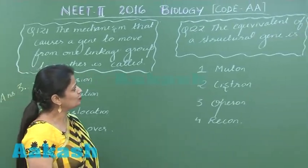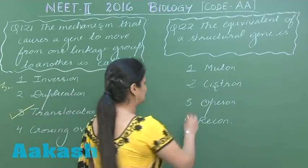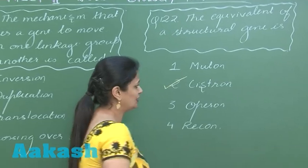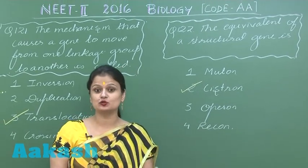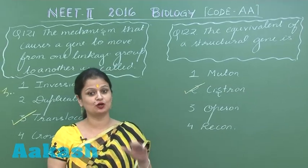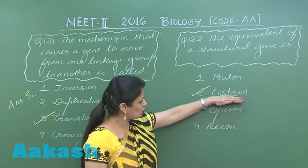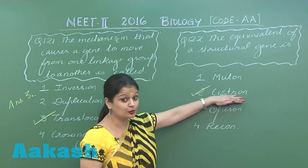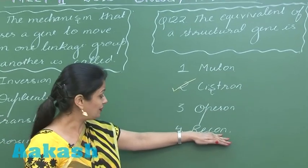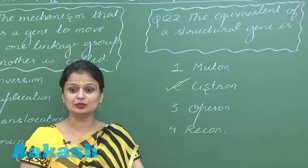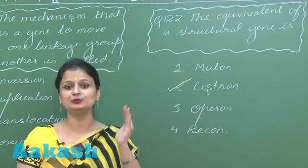Question 122: the equivalent of a structural gene is Cistron. Cistron is usually described as a structural gene which codes for a polypeptide. The minimum part of the Cistron which can undergo recombination is called Recon, and the minimum part of the Recon which can undergo mutation is known as Muton.